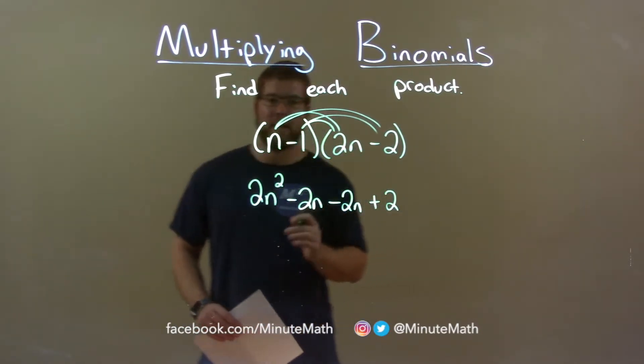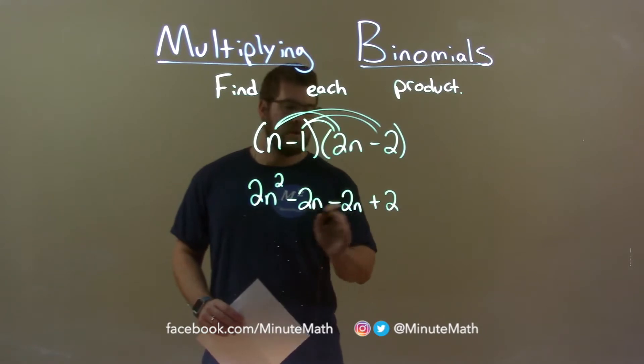Now we want to combine our like terms, which are just the ones with the n's. Minus 2n minus 2n.